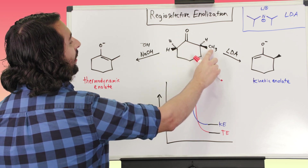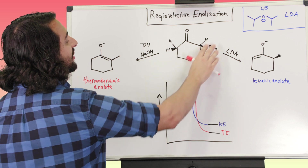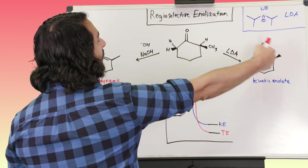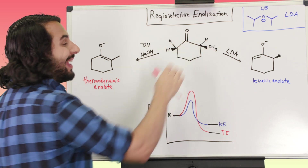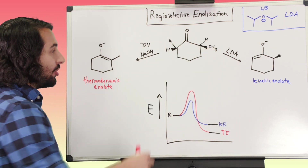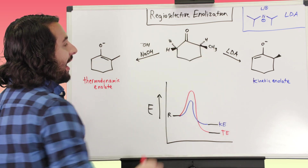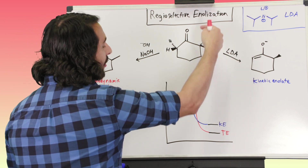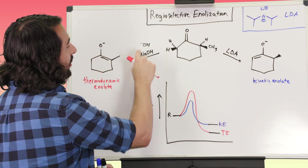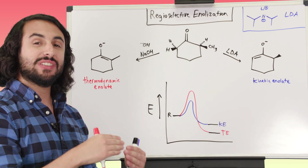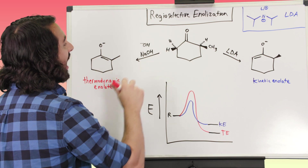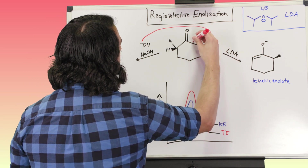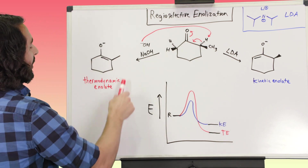Notice here that we've got this methyl group and a proton on one side, versus two protons on the other side. This is the more sterically hindered side of the molecule. These are the three alpha protons available for enolization because all of them are alpha to the carbonyl. Hydroxide is so sterically unhindered that the difference in activation energy is relatively negligible, so it is going to go toward the thermodynamic enolate.